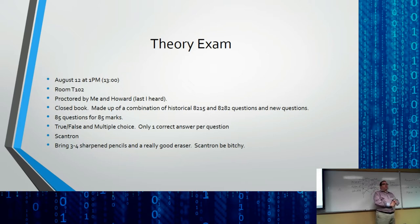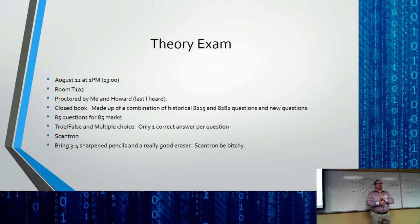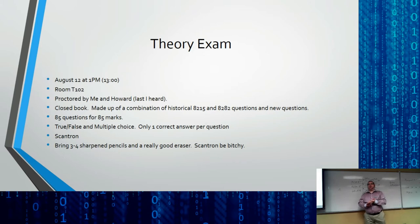It's true/false and multiple choice — there's only one correct answer per question. That means there's no circling both A and C. If there's a possibility of it being A and C, there'll be an option for 'A and C.' It's a scantron sheet — I know how much everybody loves them. Bring three or four sharpened pencils, or bring two pencils and a sharpener. Mechanical pencils tend to break really easily on scantrons and I've had students run out of lead.